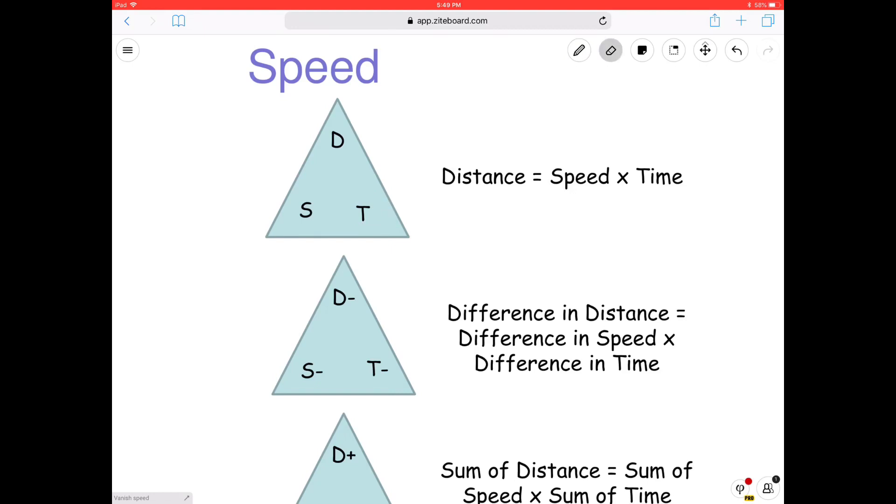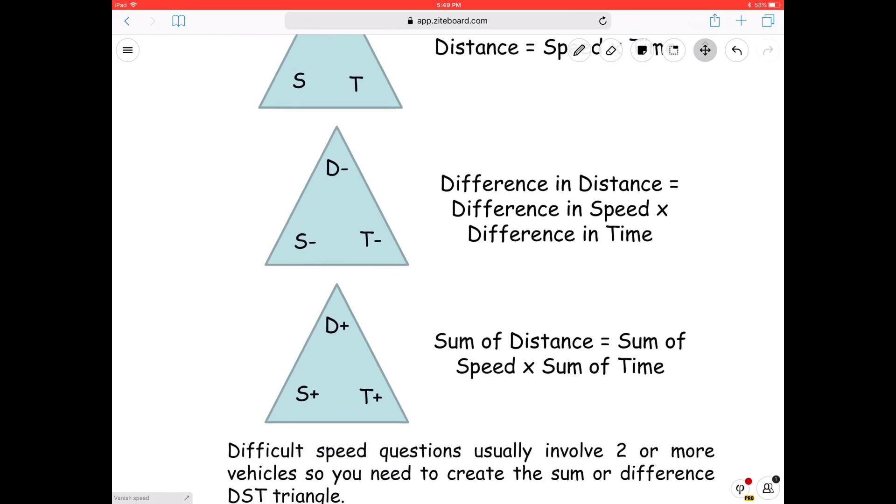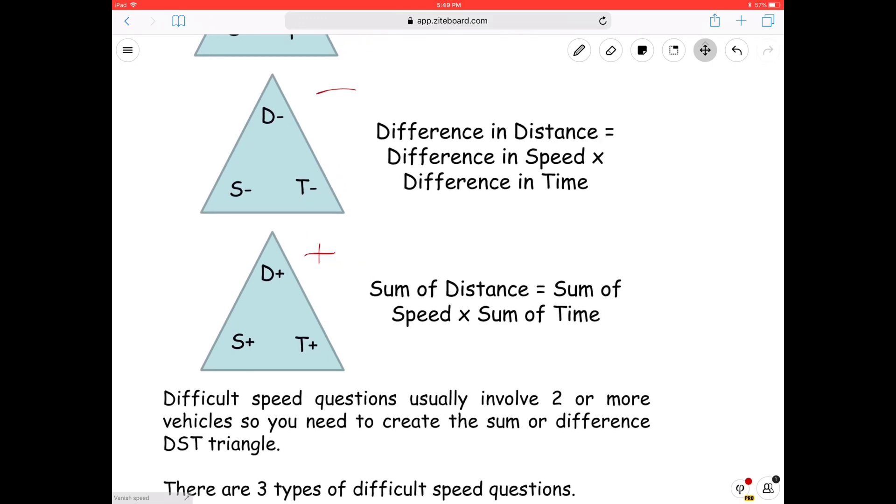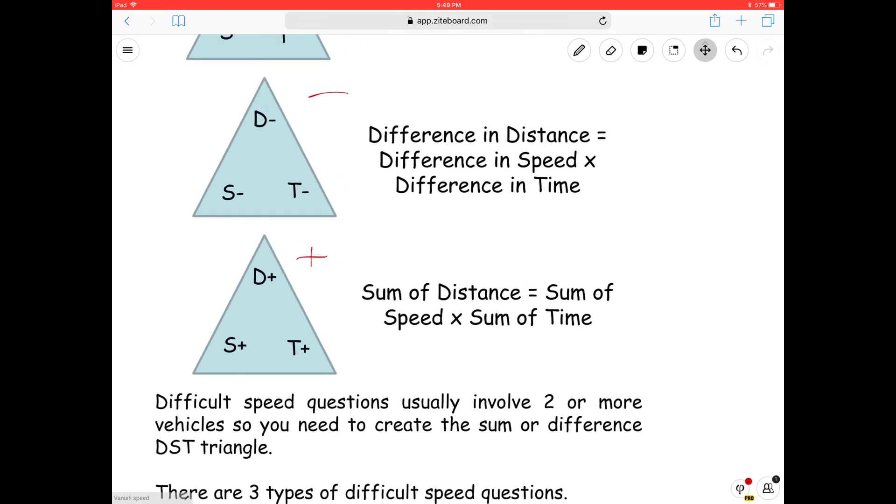So now we're going slightly advanced, okay? We have the difference in distance is equal to difference in speed times difference in time. They call it the D minus, S minus and the T minus. Okay, another way to show this is just a minus. So this is the plus. Right? So we've got three types. Or rather, two additional types. Okay, and we are going to just look at questions to see what they are all about.